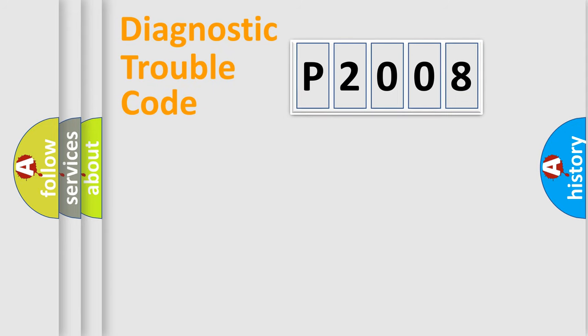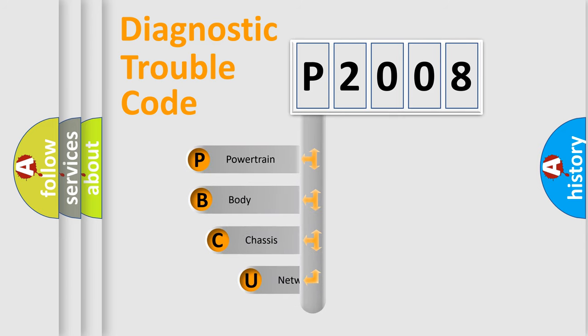First, let's look at the history of diagnostic fault code composition according to the OBD2 protocol, which is unified for all automakers since 2000. We divide the electric system of automobile into four basic units.